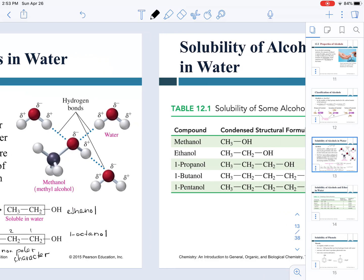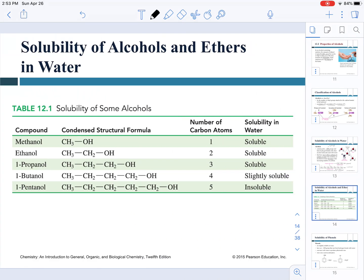To give you a specific example, table 12.1 in your textbook outlines the solubility of some alcohols in water. As you can see, methanol, ethanol, one-propanol, one-butanol are going to be mostly soluble in water.